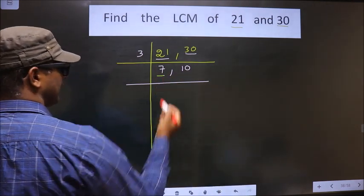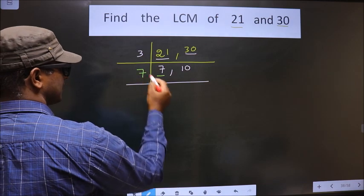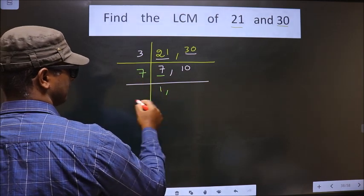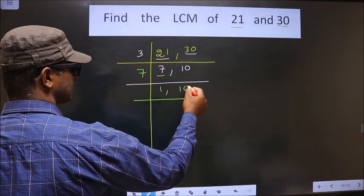Now, here we have 7. 7 is a prime number, so we take 7 here. 7 goes into 7 once. 10 is not divisible by 7, so you write down 10 as it is.